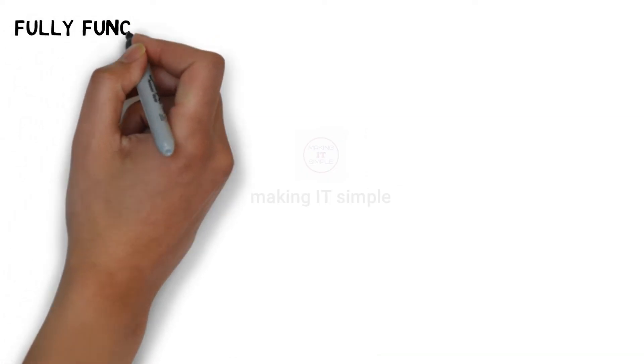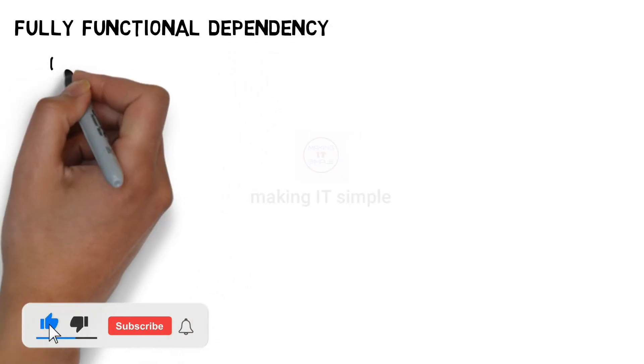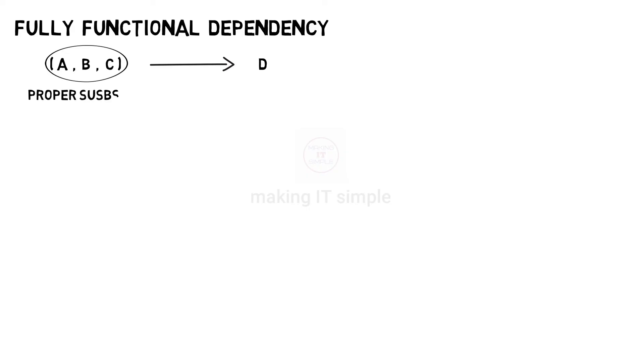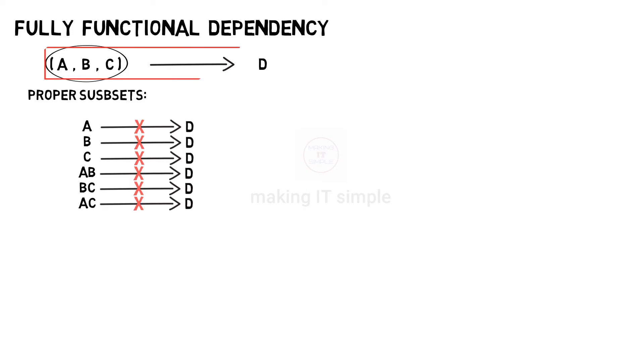The last type in today's video is Fully Functional Dependency. If there is a Functional Dependency ABC determines D, and D cannot be determined by any proper subset of the determinant ABC — that is, none of the proper subsets can determine the dependent D — then and only then can this Functional Dependency be stated as a Fully Functional Dependency.